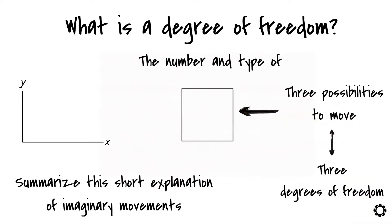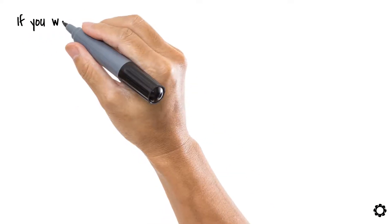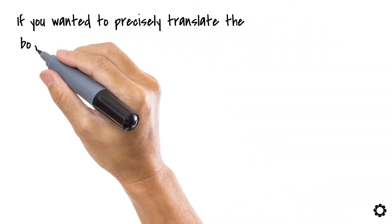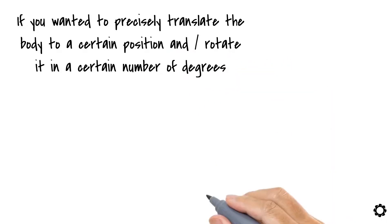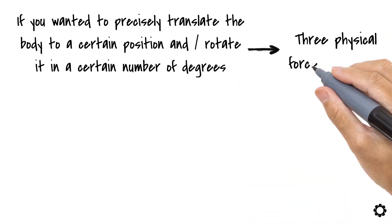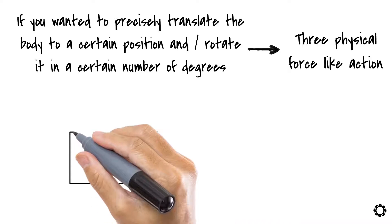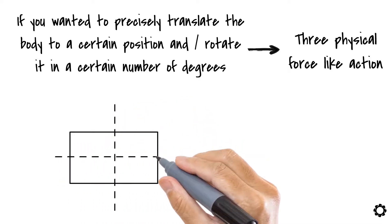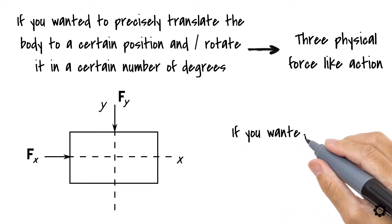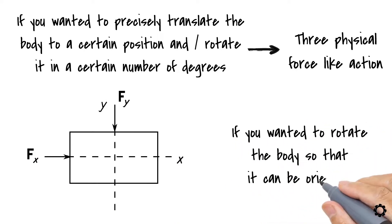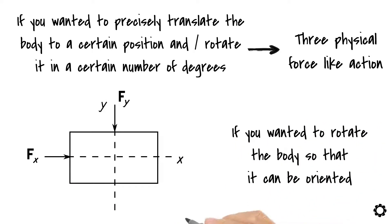Why is knowing the number and type of degrees of freedom important to us? Well, imagine that if you wanted to precisely translate a body to a certain position and rotate it a certain number of degrees, you would need three physical force-like actions. If you want to translate the body, you would need a linear force along the axis you want the body to be moved. And if you wanted to rotate the body so that it can be oriented as needed, you will need a torque or moment to make this happen.